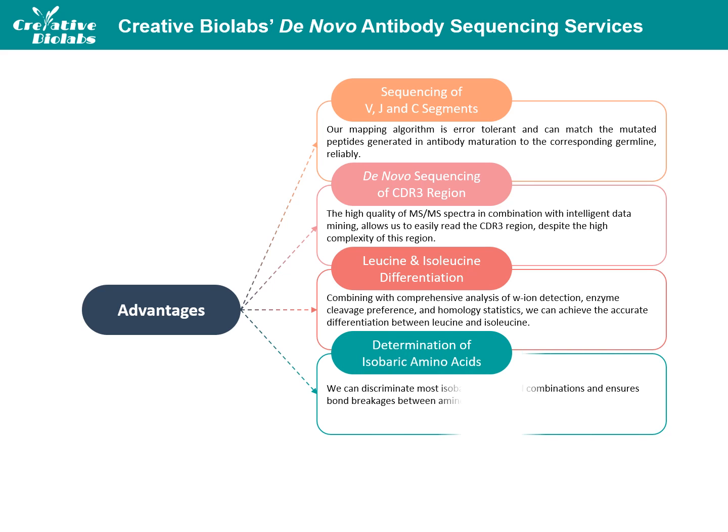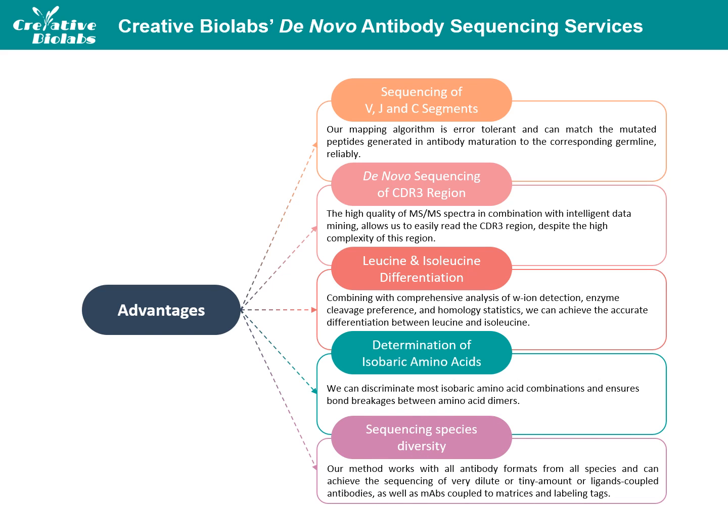For the determination of isobaric amino acids, we can discriminate most isobaric combinations and ensure bond breakages between amino acid dimers. For example, glutamine can be distinguished from lysine, and asparagine can be distinguished from double glycine. Leucine will be predicted from the germline sequences and the cutting frequency of chymotrypsin. Furthermore, our method works with all antibody formats from all species, and can achieve sequencing of dilute or tiny amount antibodies, ligand-coupled antibodies, monoclonal antibodies coupled to matrices, and small-group labeled antibodies. Mixtures of two light chains produced by older hybridomas can also be sequenced.